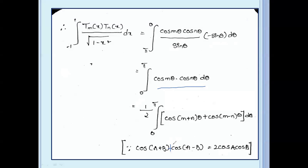Now we use the identity: cos(a+b) plus cos(a minus b) equal to 2 cos a cos b.